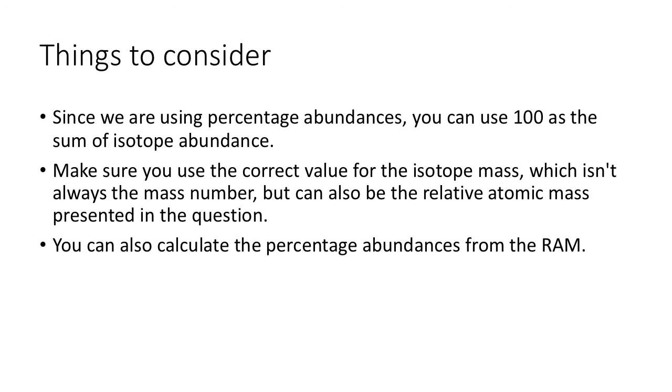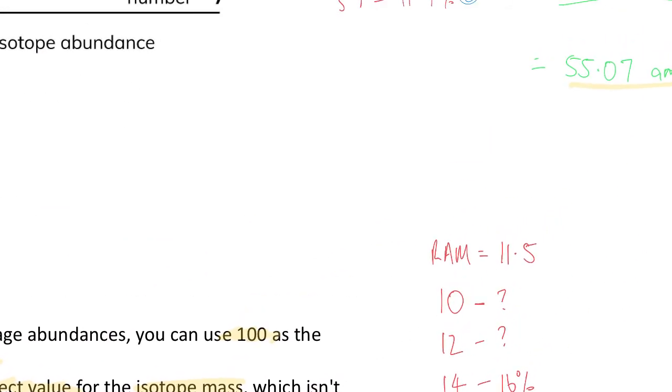So since we're using percentage abundance, you use 100% as the sum of isotope abundance. But really, if you wanted to, you could take the absolute values that we took in the very first graph and actually use that 84 at the beginning, but don't use the percentages. Make sure you use the correct value for the isotope mass. So in that question we used the mass number, but you don't always use the mass number. You actually sometimes are given the actual relative atomic mass, and so therefore you have to use that. And you can also work out the percentage abundance from the RAM, which means you're just effectively doing this calculation backwards.